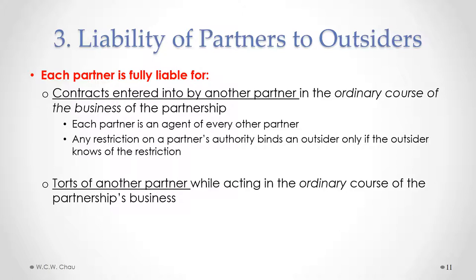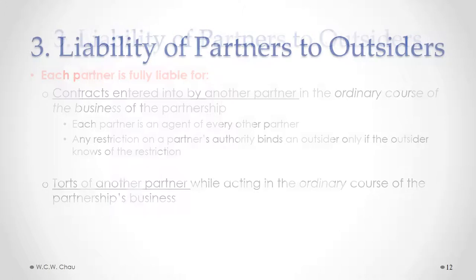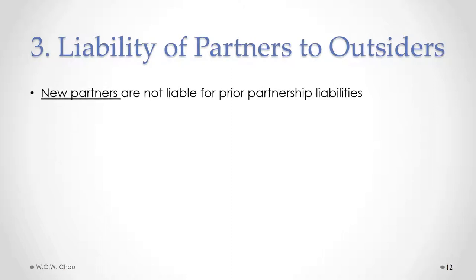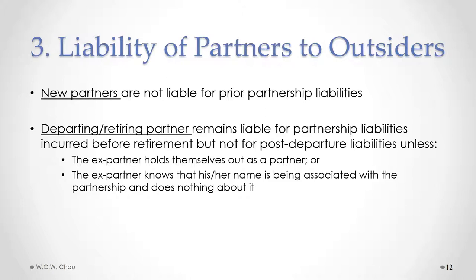Each partner is also fully liable for the torts of any other partner, as long as the tort arose while acting in the ordinary course of the partnership. When a new partner is added, that new partner is not liable for any prior liabilities of the partnership. Conversely, when a partner leaves — whether departing for another job or retiring — that partner remains liable for partnership liabilities incurred before departure, but is not liable for post-departure liabilities unless they hold themselves out as a partner or allow their name to still be associated with the partnership.